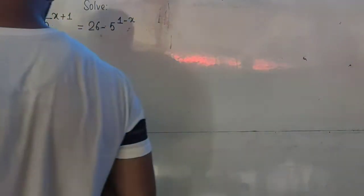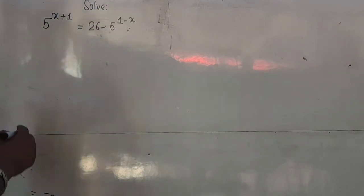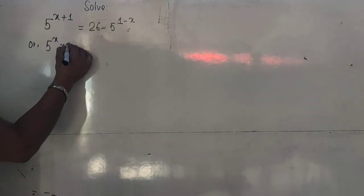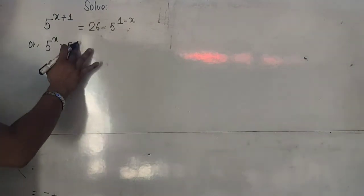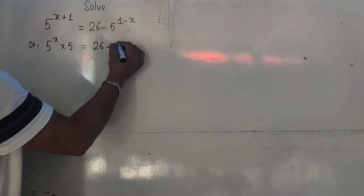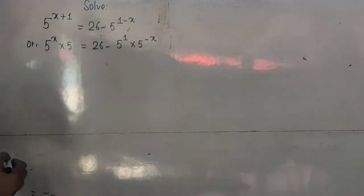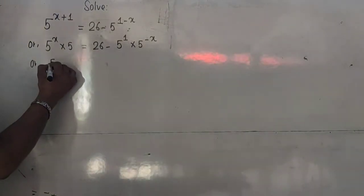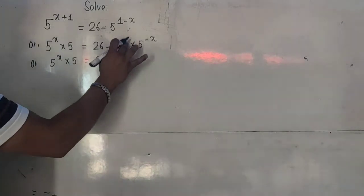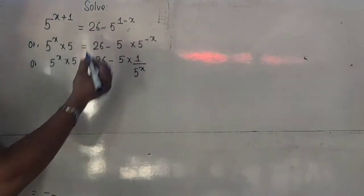Here we have the equation 5 to the power x+1 equals 26 minus 5 to the power 1 minus x. I can write 5^(x+1) as 5^x times 5, and since 5^1 is 5, this becomes 5 times 5^x. On the right side, 5^(1-x) is 5^1 times 5^(-x), so we have 5 times 5^x equals 26 minus 5 times 5^(-x).